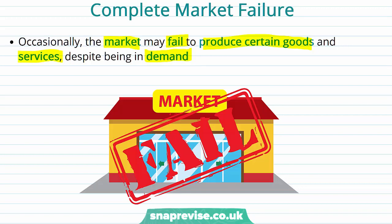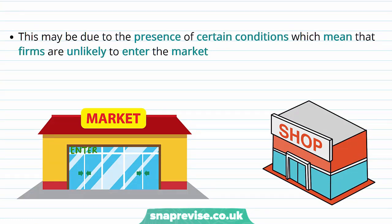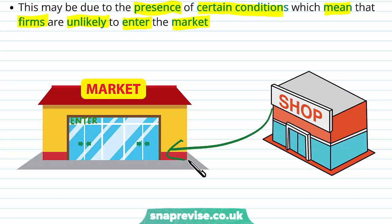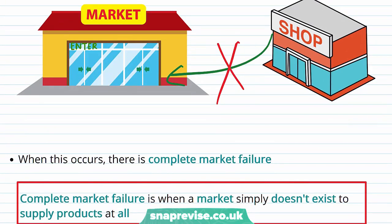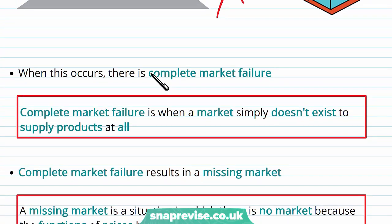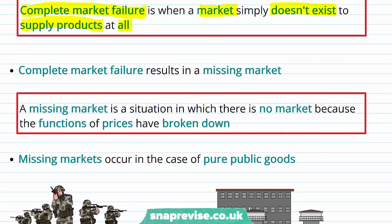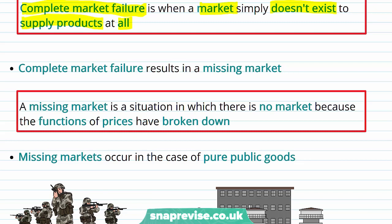The reason we may have no supply within the market may be due to the presence of certain conditions which mean firms are unlikely to enter the market — some sort of barriers to entry making it not feasible for firms to do so. When this occurs, it is called complete market failure, defined as when a market simply doesn't exist to supply products at all. Complete market failure results in a missing market, which is a situation in which there is no market because the functions of prices have broken down.